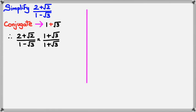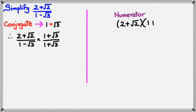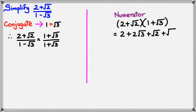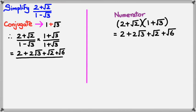Just as I did in the previous example, I'm going to work out the numerator first. I have (2 plus square root of 2) multiplied by (1 plus square root of 3). Expanding this as a quadratic I get 2 plus 2 root 3 plus root 2 plus root 6, because square root of 2 times square root of 3 is square root of 6. I can't simplify this any further, so I leave the numerator as is.